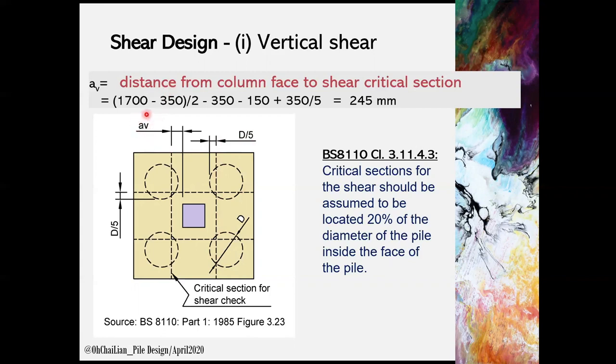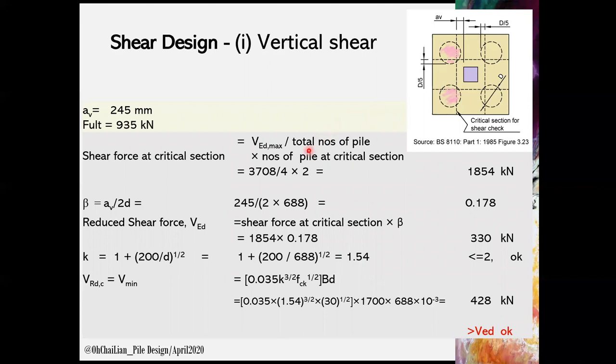To get AV, we can take half of the width of the pile cap, excluding the column width, then deduct the pile diameter, deduct the pile cap extended edge, and plus again D over 5. Here we have AV is 245 mm. Shear force at the critical section can be obtained by multiplying the ultimate load per pile with total numbers of pile at the critical section. In this case, the critical section across total of two numbers of pile. Beta is a ratio of AV to 2D. A reduced shear force VED can be obtained by multiplying the shear force at critical section with beta.